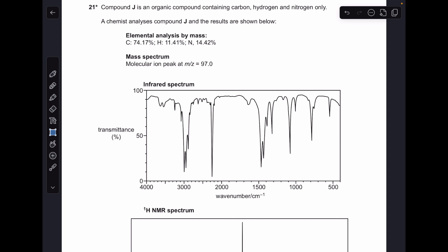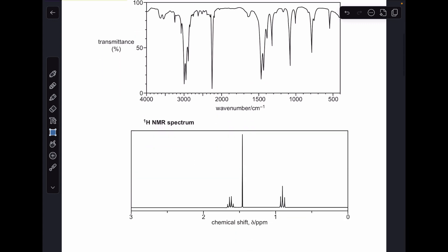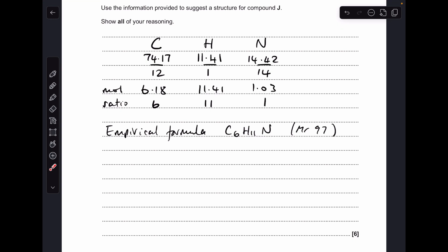We've got the elemental analysis by mass, the molecular ion peak from the mass spectrum, the IR spectrum, and the proton NMR spectrum. What makes this question a bit tricky is the fact that there's no peak areas in the NMR spectrum. Anyway, we'll make a start by looking at the percentage composition by mass. So the typical thing: percentage over the relative atomic mass gives us the moles, dividing by the smallest gives us the ratio. So our empirical formula is coming out at C6H11N, and that's got an MR of 97.